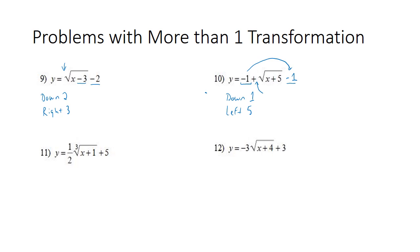Looking at number eleven, we have the plus five on the outside, so it goes up five. We have plus one on the inside, so it goes left one. And we have this one-half here in front of the radical, which means it is dilated and it's been shrunk.